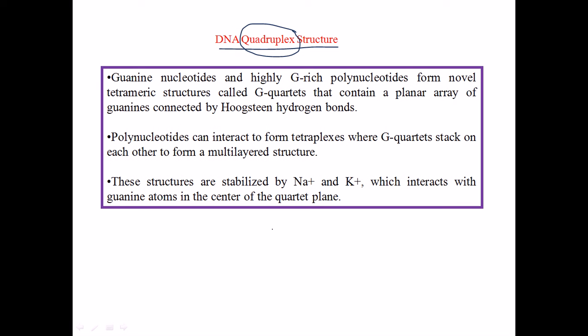Guanine has a very, very good capability to making lots more Hoogstein pairing rather than the adenine from the purine groups. That's why to make this quadruplex structure, the first thing we need is the presence of large amount of guanine-rich polynucleotide sequences in a particular stretch of DNA.